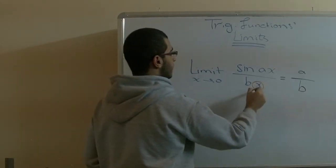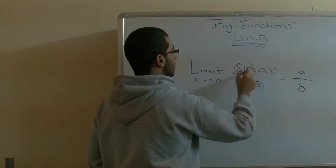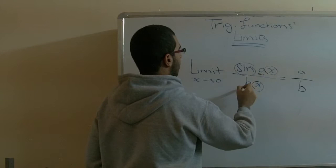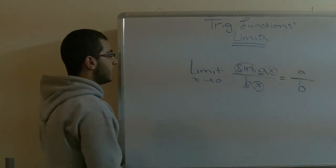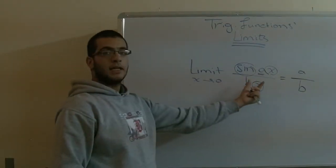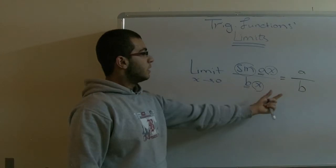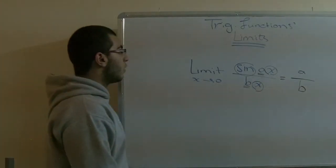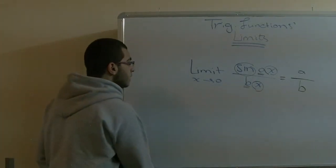Because these already equals 1, so only the coefficients are left. It's the same with tan: if we have tan ax over bx, we have the answer a over b. So let's try it.